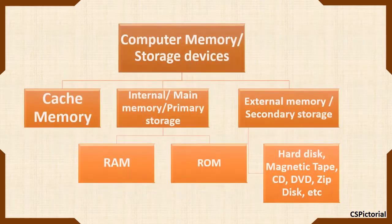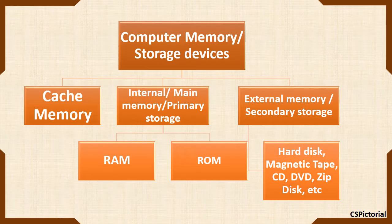The computer memory is of three types: the fastest cache memory, the internal memory or main memory — the RAM and ROM — and the external memory, which could be hard disk, CD, DVD, etc. The internal memory is available as chips on the motherboard of the CPU. The external memory consists of secondary storage devices that can be plugged in whenever required.